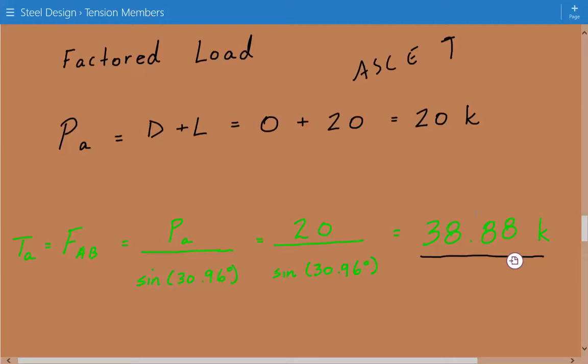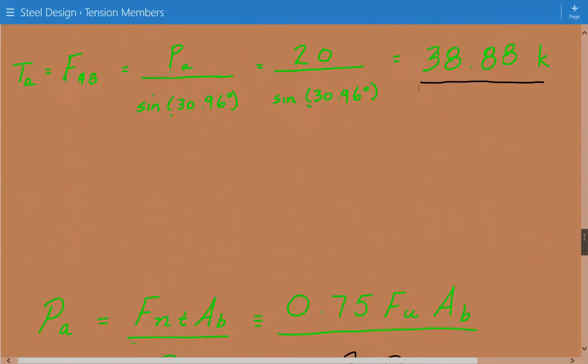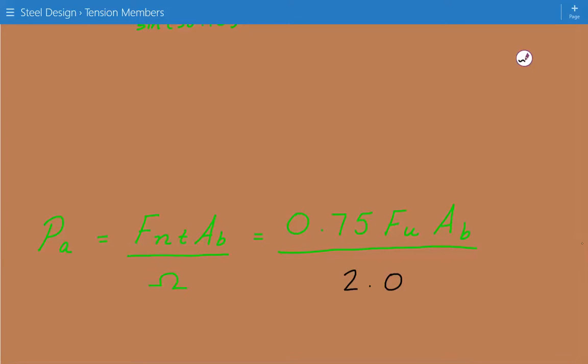Based on this, now we can calculate the gross cross-sectional area, the required gross cross-sectional area per AISC equation J3.1. So our allowable tensile load is equal to our nominal strength divided by a safety factor. So this numerator is the nominal strength. And again, it's FNT times a cross-sectional area. And FNT, again,